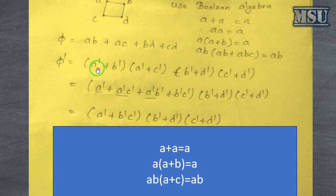So now you multiply this. So if you want to multiply a' and a', a' and a', it results in a', a' and c', it results in a'c', and b' into a', it results in a'b', and then b' into c', it results in b'c'.